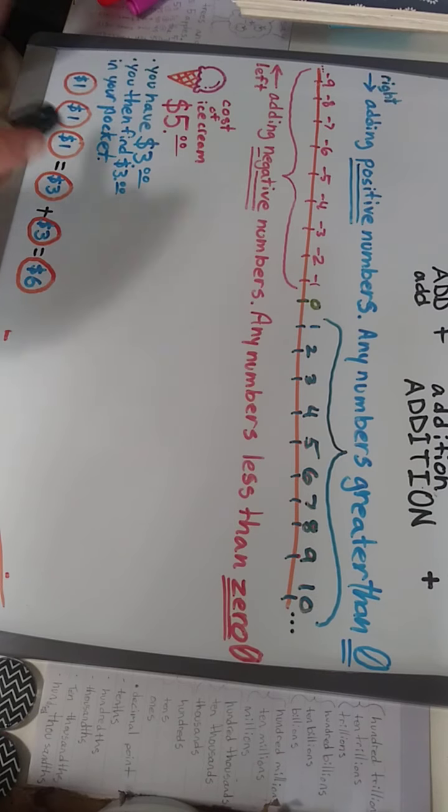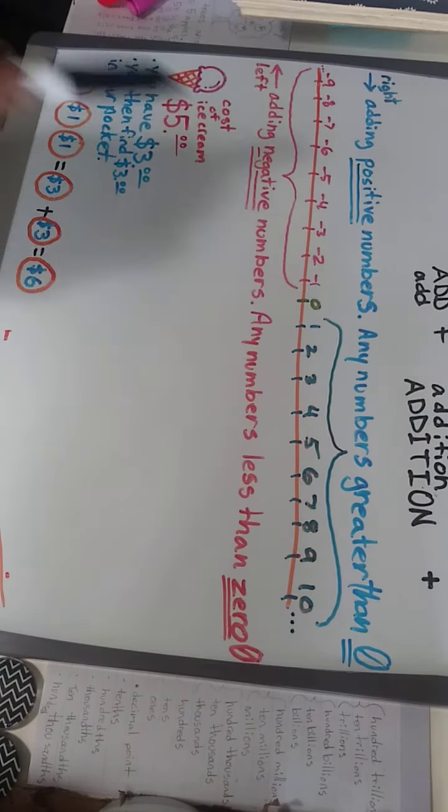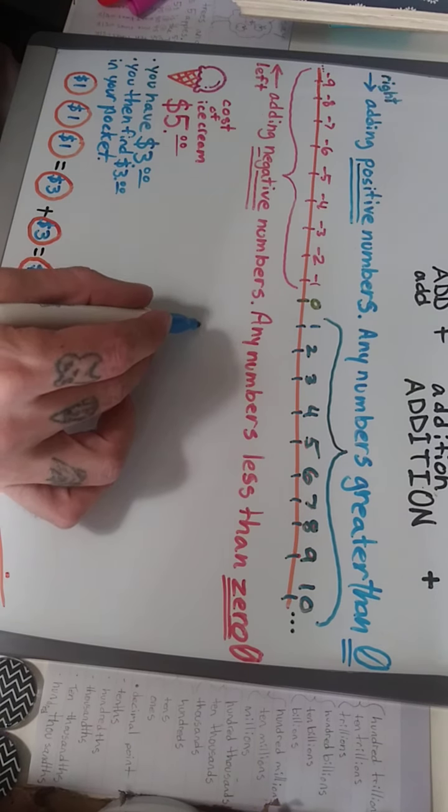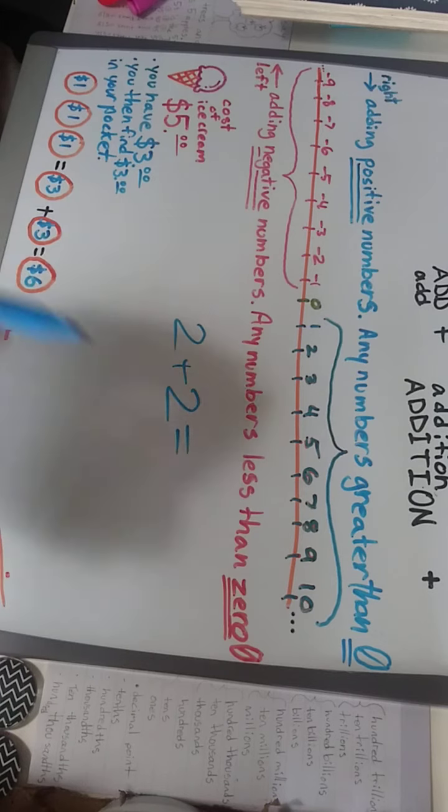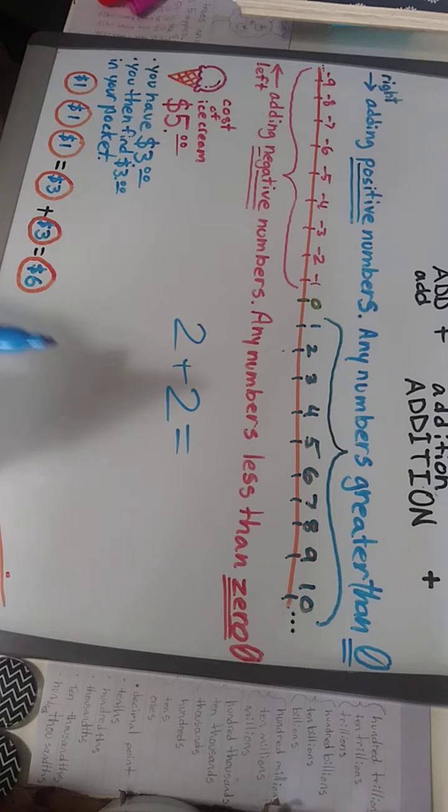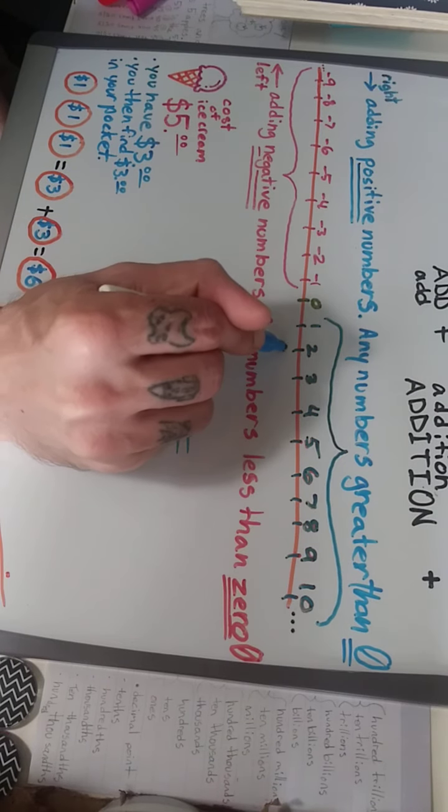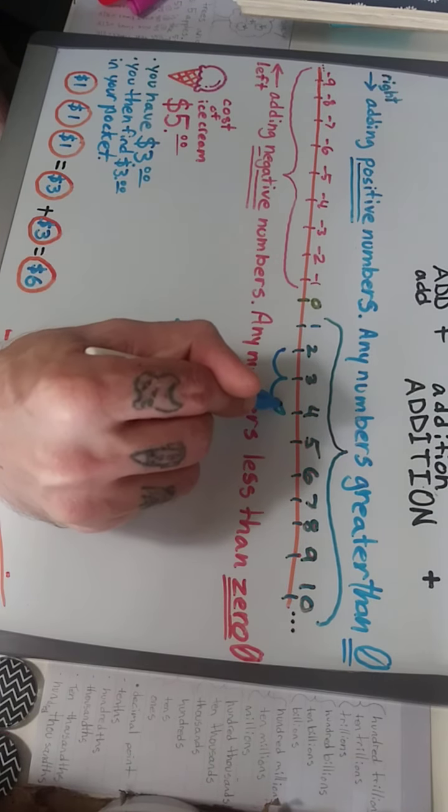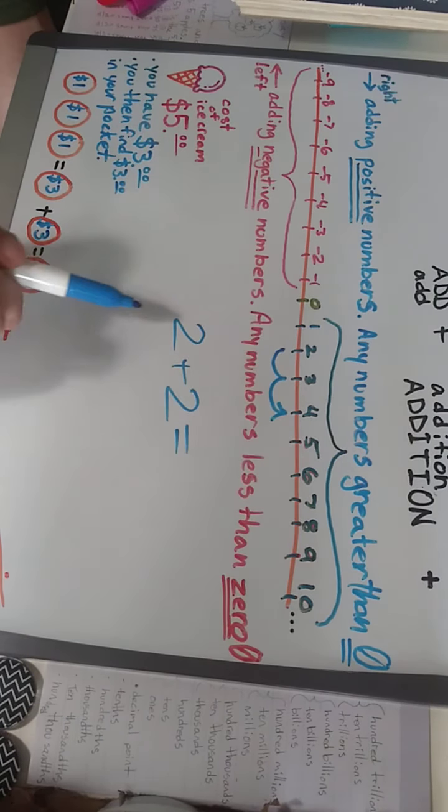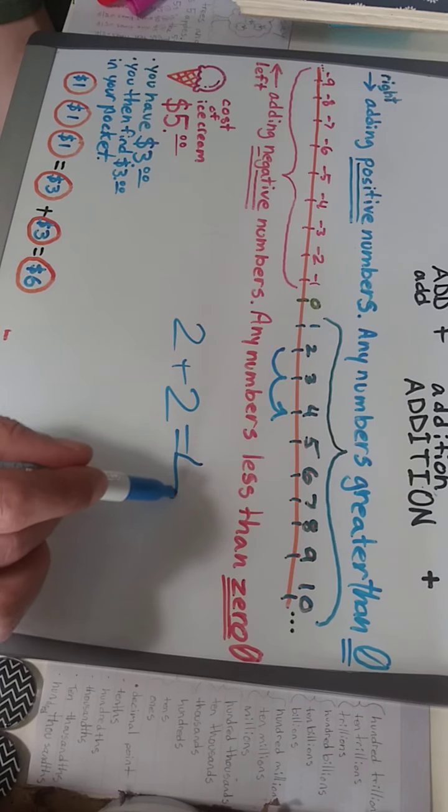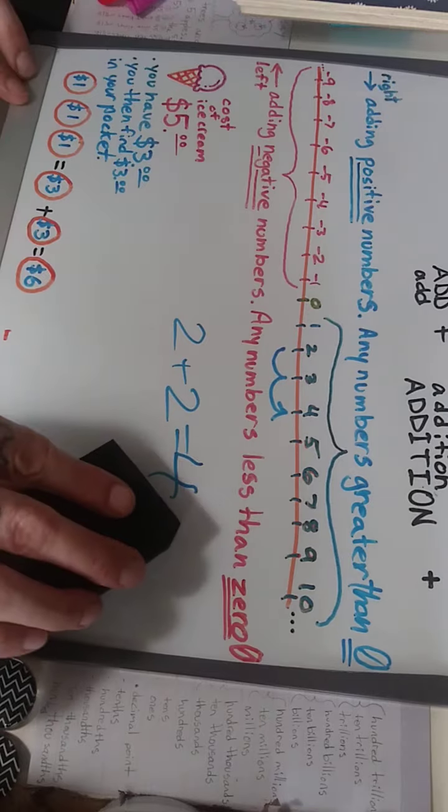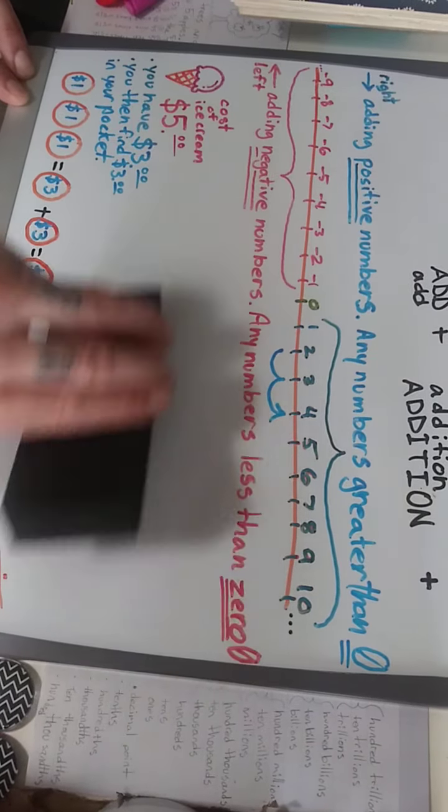So for adding positive numbers, you always go to the right. For example, two plus two equals - you would start at two, and then move over one, two, going to the right. So two plus two equals four. That's an example of adding positive numbers.